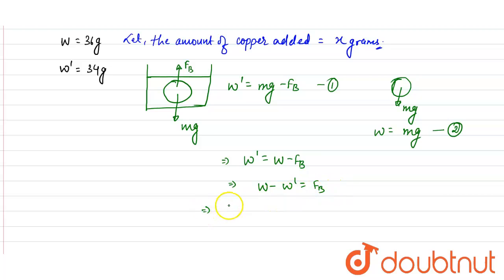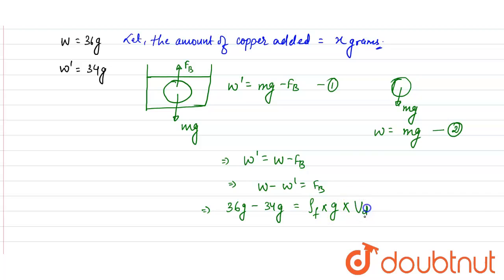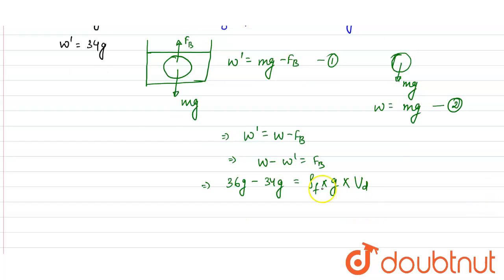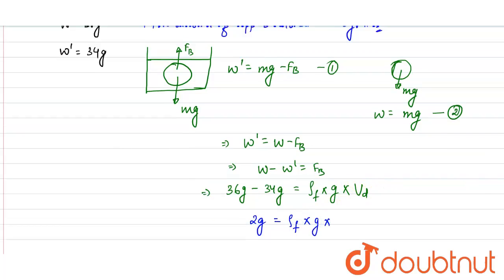The loss in weight is 36g minus 34g = 2g, which equals the buoyancy force. The buoyancy force is given as: density of fluid × acceleration due to gravity × volume of fluid displaced. So 2g = density of fluid × g × volume of water displaced.